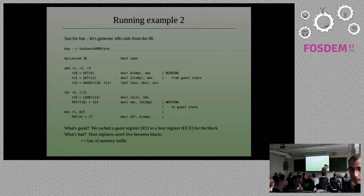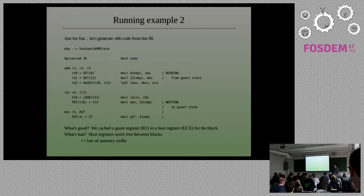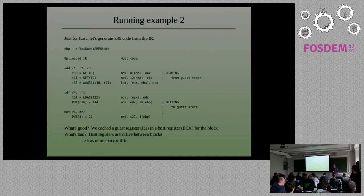But there is a downside, which becomes more obvious as the blocks get longer. At one end of the block we're reading values out of the guest state into host registers, and at the other end we're putting values from host registers back into the guest state — back into memory. The effect is that there are no registers live across block boundaries. It makes the compiler simple, but it generates a huge amount of extra memory traffic. The host registers are not very efficiently used. For example, if the original program contains a loop, every time we go around the loop we're flushing everything back into memory.